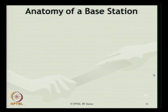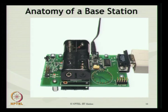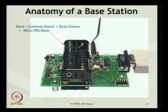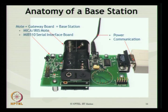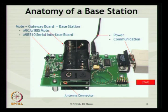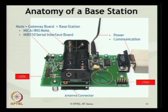Looking at the anatomy of the base station used for sensor networking, the photograph shows what the base station looks like. It is a mote plus gateway board, which we call the base station. The base station has an IRIS mote in black, an MIB 510 serial interface board, a communication receiver, and a power battery. It has an antenna connector useful for RF communication signals. The JTAG port is useful for connecting to an Ethernet card, and LEDs are used for generating different alarm signals based on the programming features.